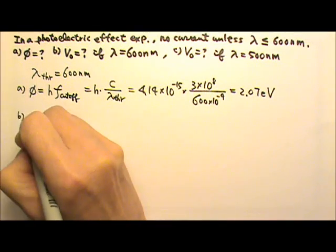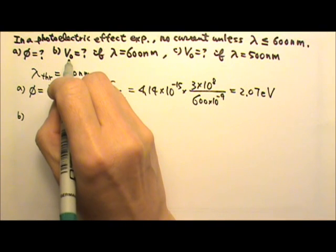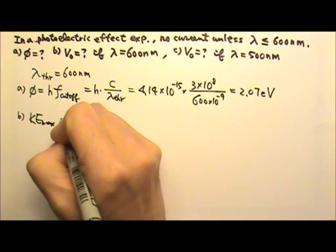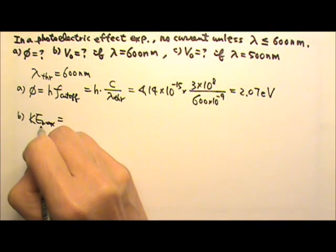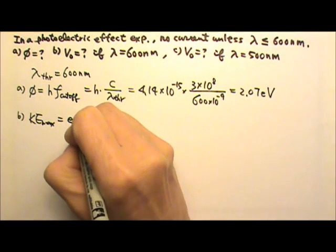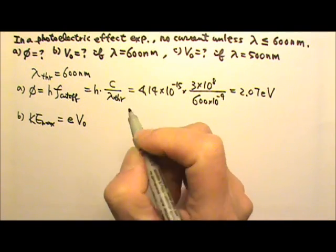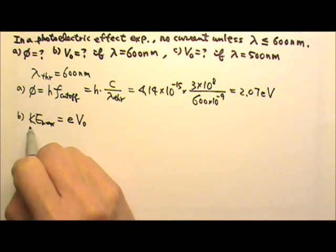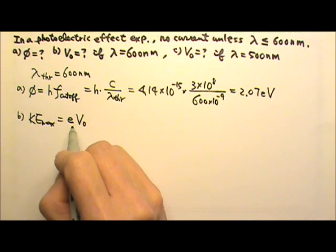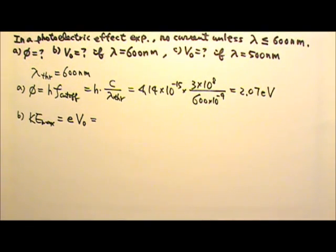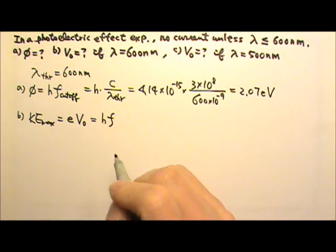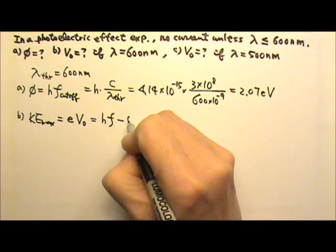For part b, the stopping voltage. The stopping voltage is used to measure the maximum kinetic energy. The maximum kinetic energy equals q times v, where q is 1e for an electron and v is the stopping voltage. When the current is stopped, all kinetic energy is converted to potential energy, so KE_max equals qV. The maximum kinetic energy is also equal to hf, the photon's energy, minus the work function.